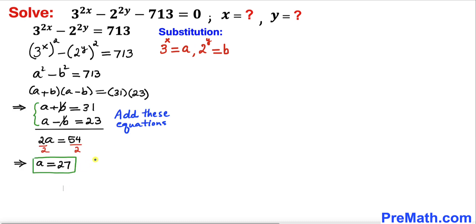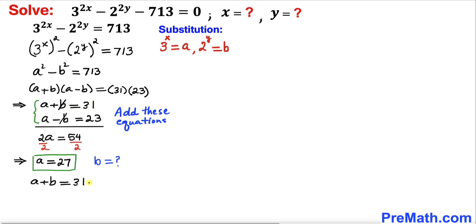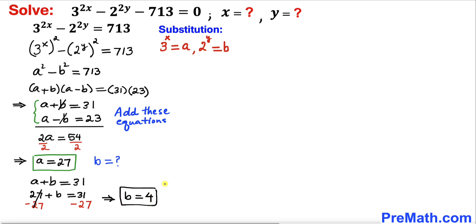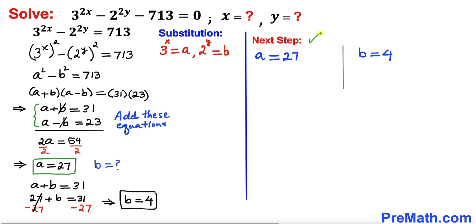Now we find the value of b. Recalling the first equation a plus b equals 31, and substituting a equals 27, we get 27 plus b equals 31. Subtracting 27 from both sides, b turns out to be 4. So we have a equals 27 and b equals 4.